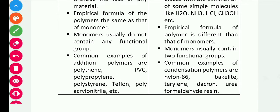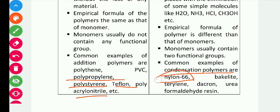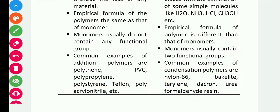Common examples of addition polymerization are polyethylene, PVC (polyvinyl chloride), polypropylene, polystyrene, and Teflon. You need to remember at least two or three of these. Examples of condensation polymerization include nylon 6,6, Bakelite, Dacron, urea formaldehyde, and Terylene.